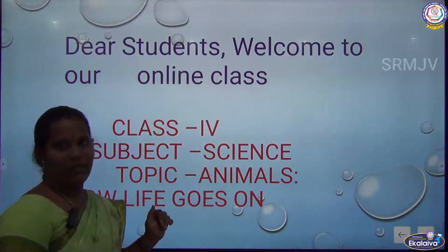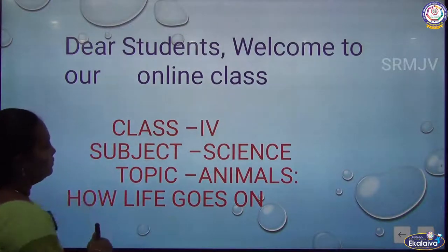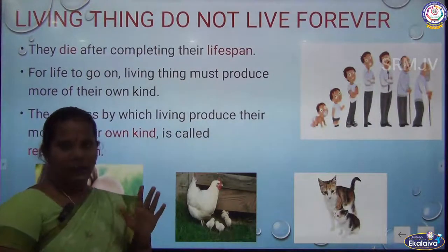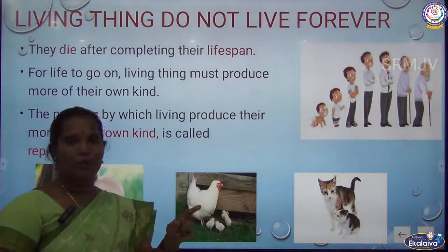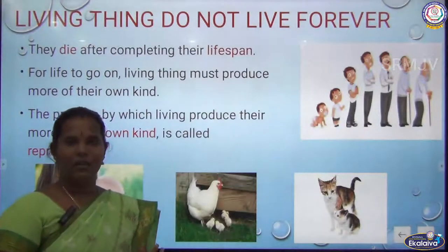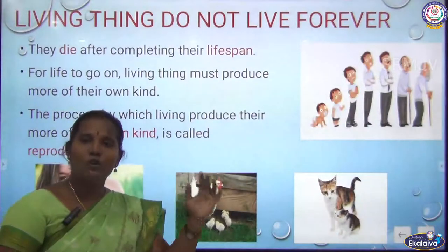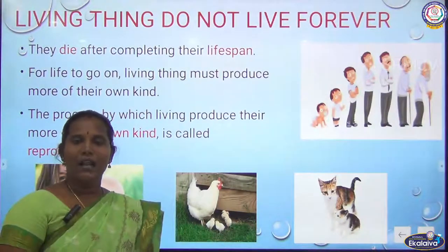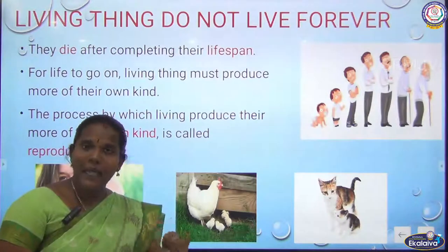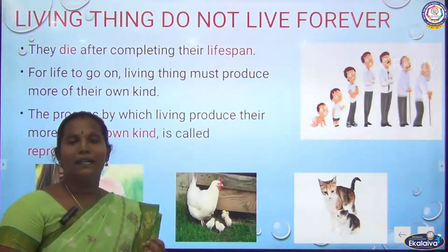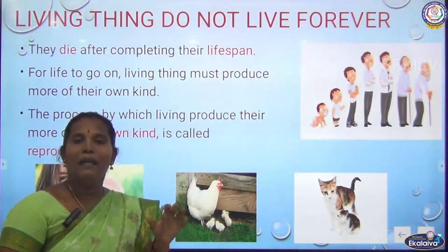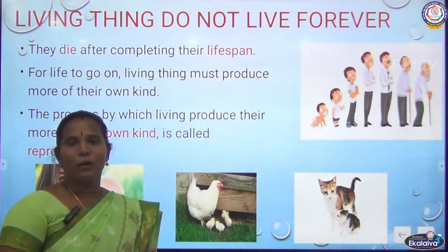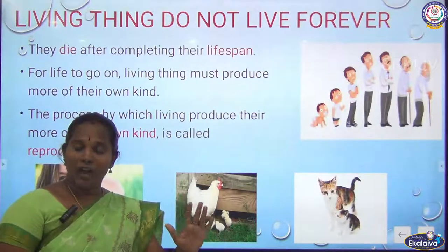Living things do not live forever — we know that very well. We can divide things into two: non-living things and living things. A non-living thing has no life. A living thing has life, meaning it can breathe, take food, need water, and it can reproduce. This is the most important characteristic.